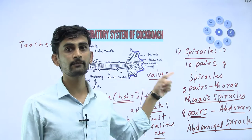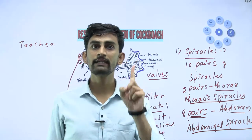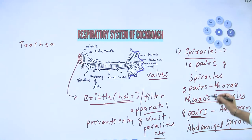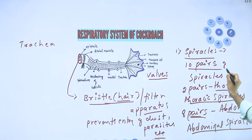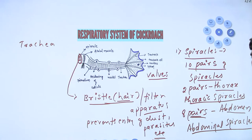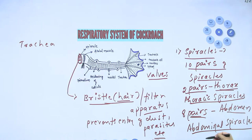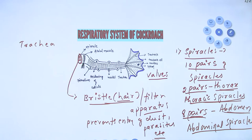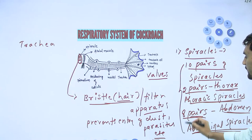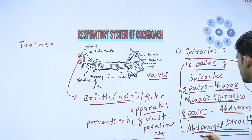First, spiracles. There are totally 10 pairs of spiracles - openings found on either side of the body wall. Out of 10, 2 pairs are present on the thorax region, called thoracic spiracles, and the remaining 8 pairs are present on the abdominal segments, called abdominal spiracles. This point - 10 pairs of spiracles total - is very important.